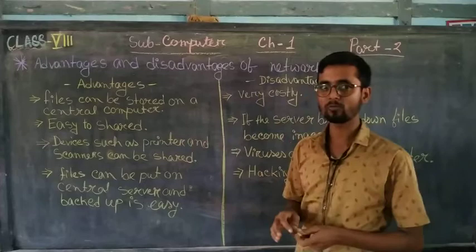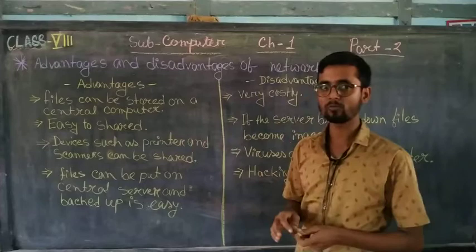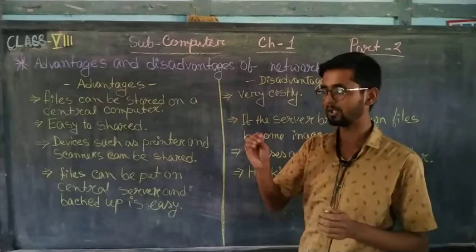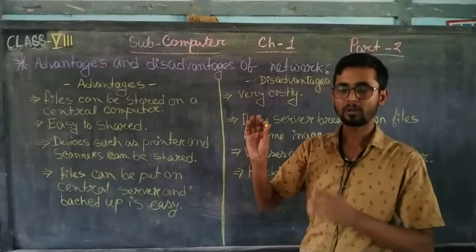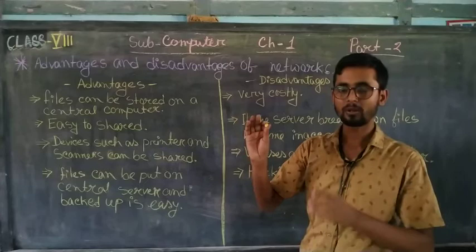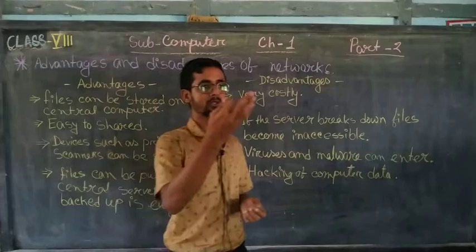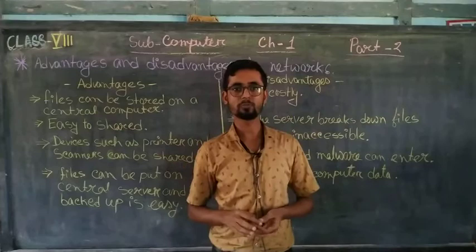In the client-server model, there is a main fixed server room or control room. From this room the whole data can be shared to each and every computer. All the data stored in the central server room can be used by all users at the same time, and each person can also store data there.